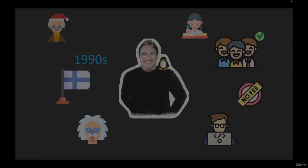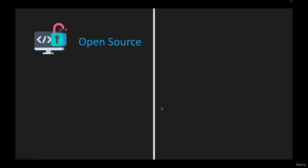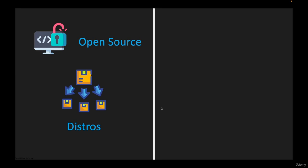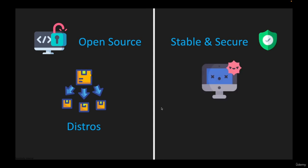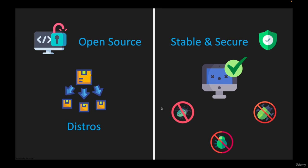One of the biggest benefits of Linux is its openness. Because it's open source, anyone can access the source code and modify it to suit their needs. This has led to the development of thousands of different versions of Linux, known as distributions or distros. Another benefit is Linux's stability and security — it is known for being very stable and rarely crashing or freezing. It is also less vulnerable to viruses and other types of malware than other operating systems, making it a great choice for security-conscious users.